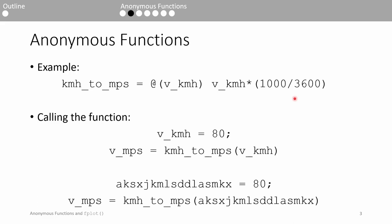To call the anonymous function, we first declare a variable holding the speed we want to convert. In this case, we want to convert 80 kilometers per hour to meters per second. We call the km to mps function and supply the v kmh variable as the input to the function, and we store the results in the v mps variable.